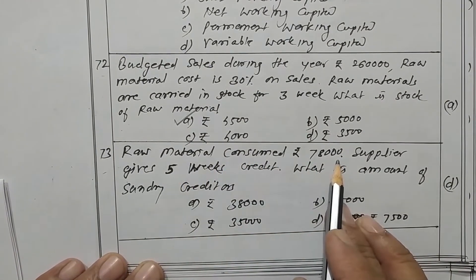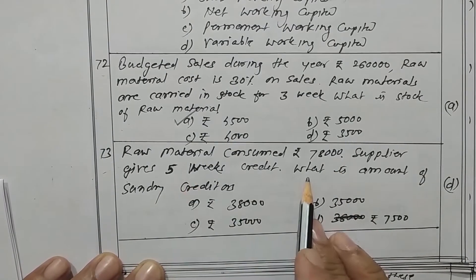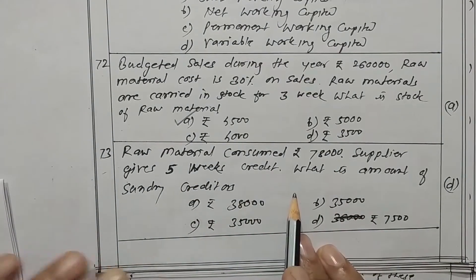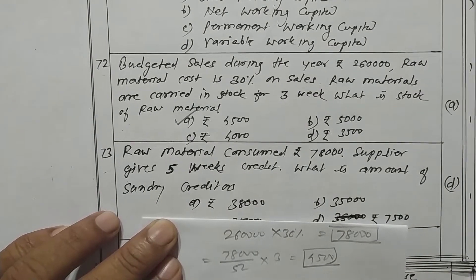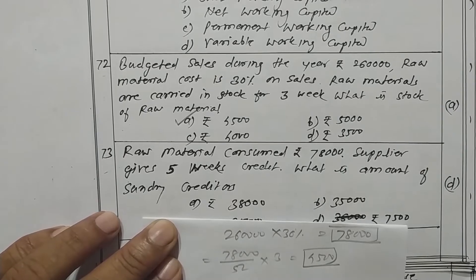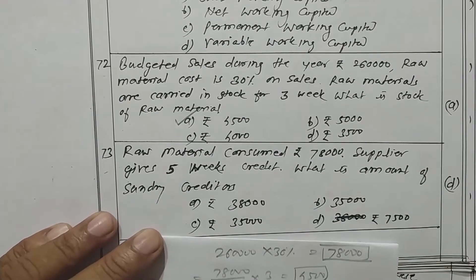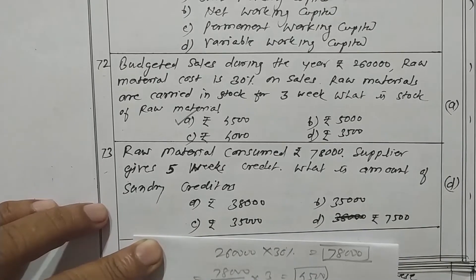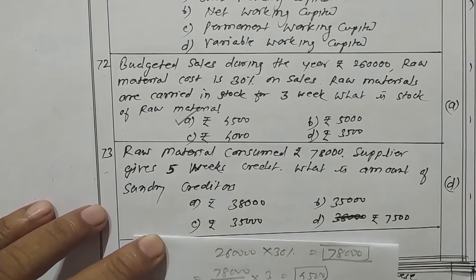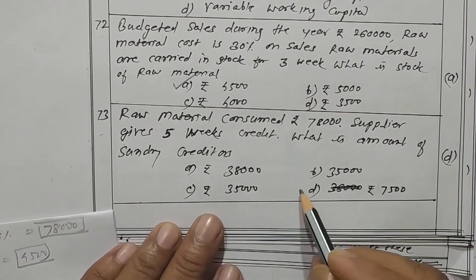Raw material consumed is rupees 78,000. Supplier gives 5 weeks credit. So to find sundry creditors: 78,000 divided by 52 into 5 weeks gives rupees 7,500. Option D is the correct one.